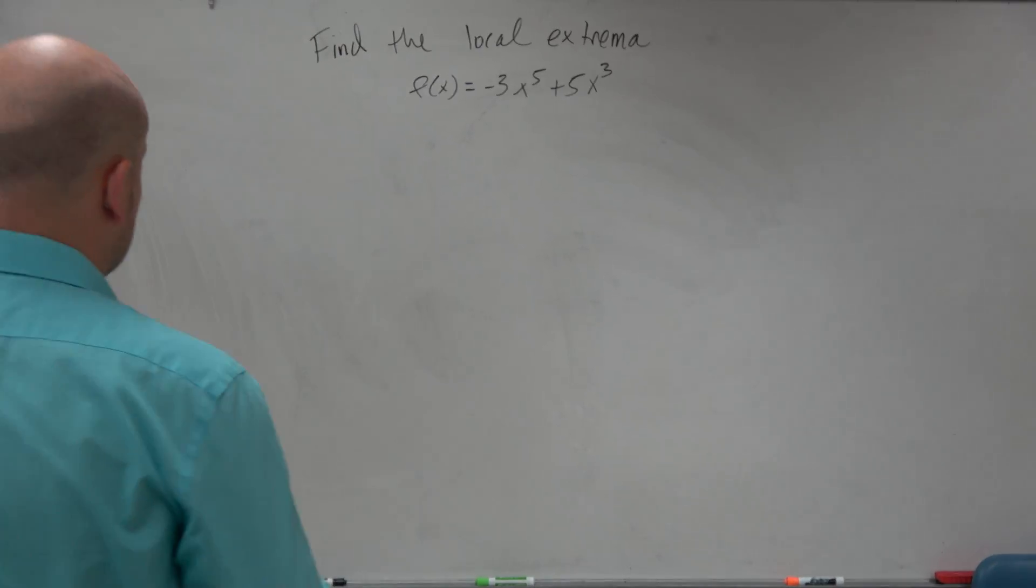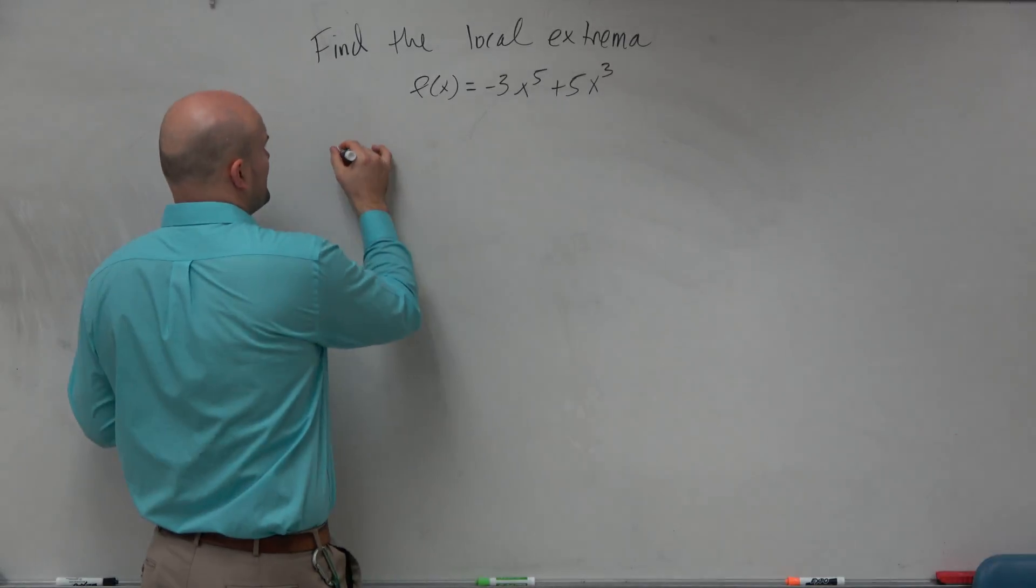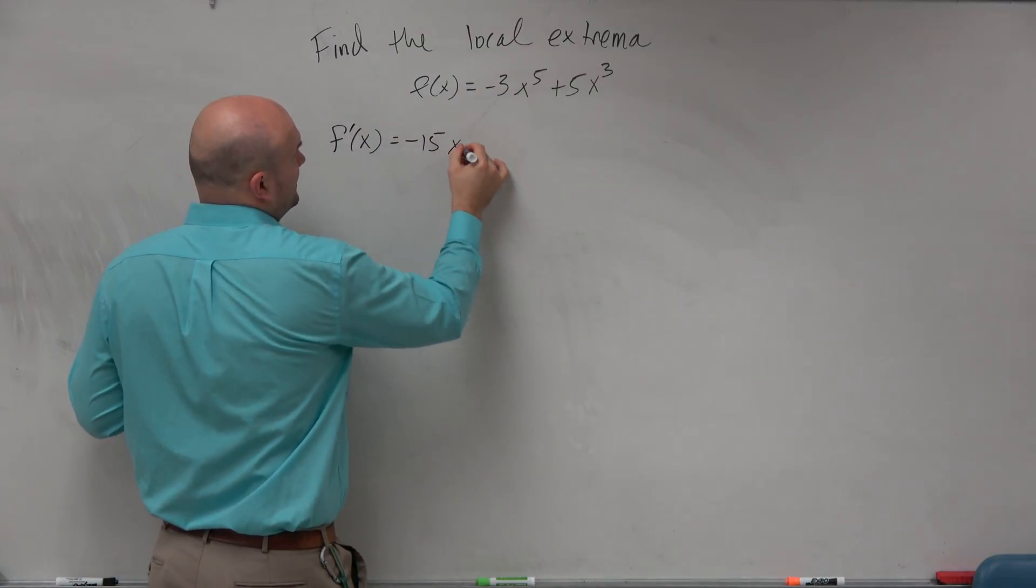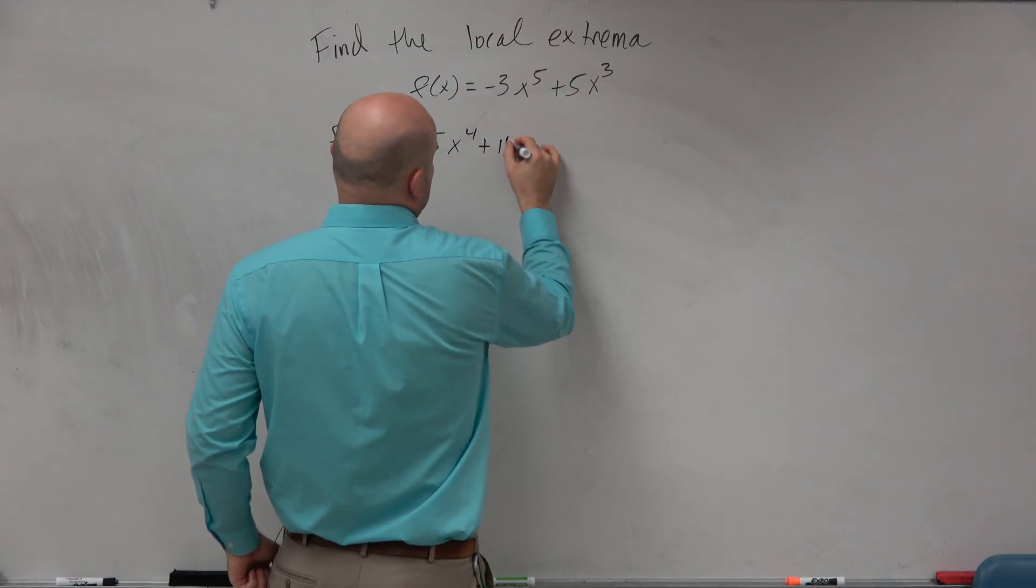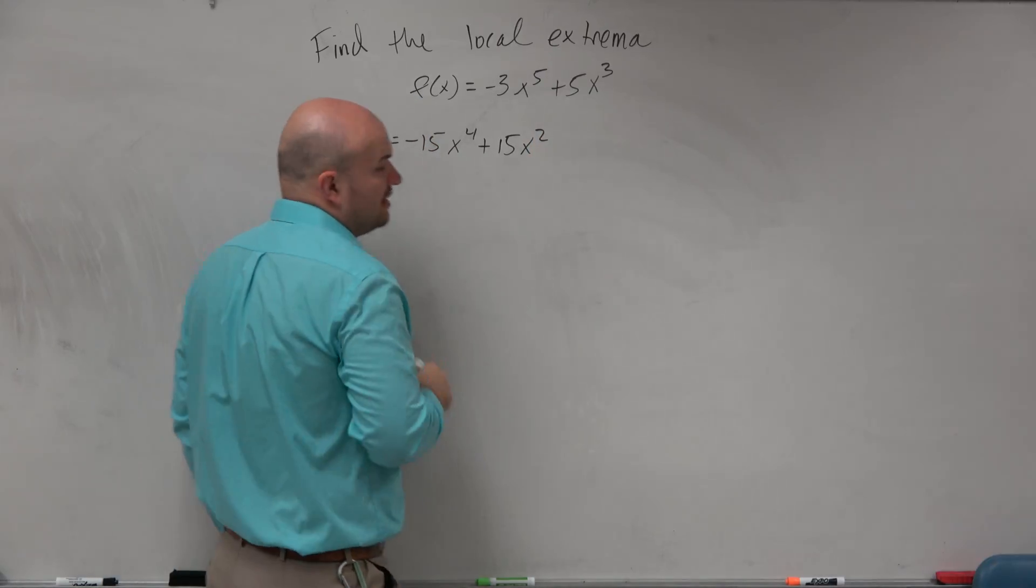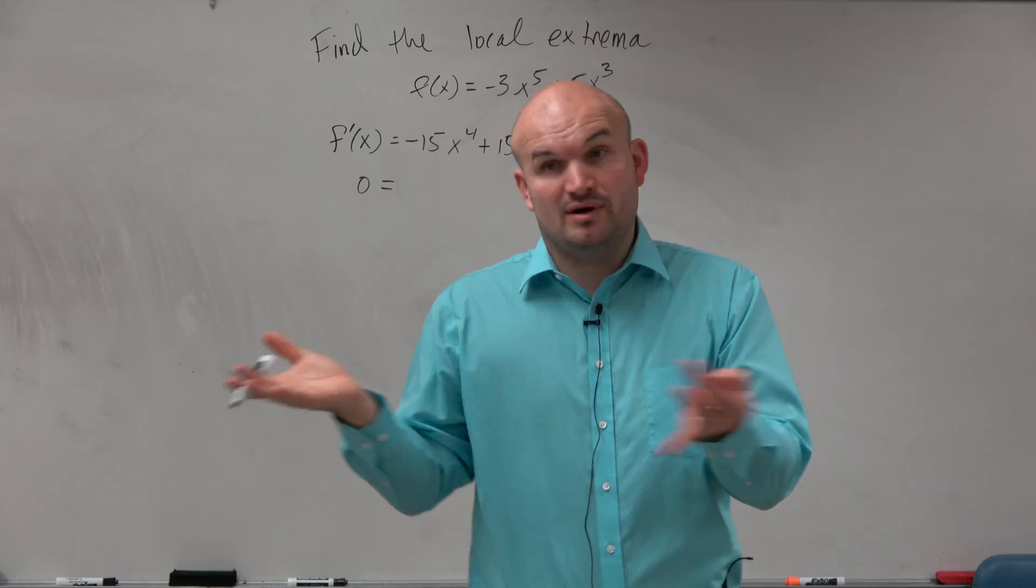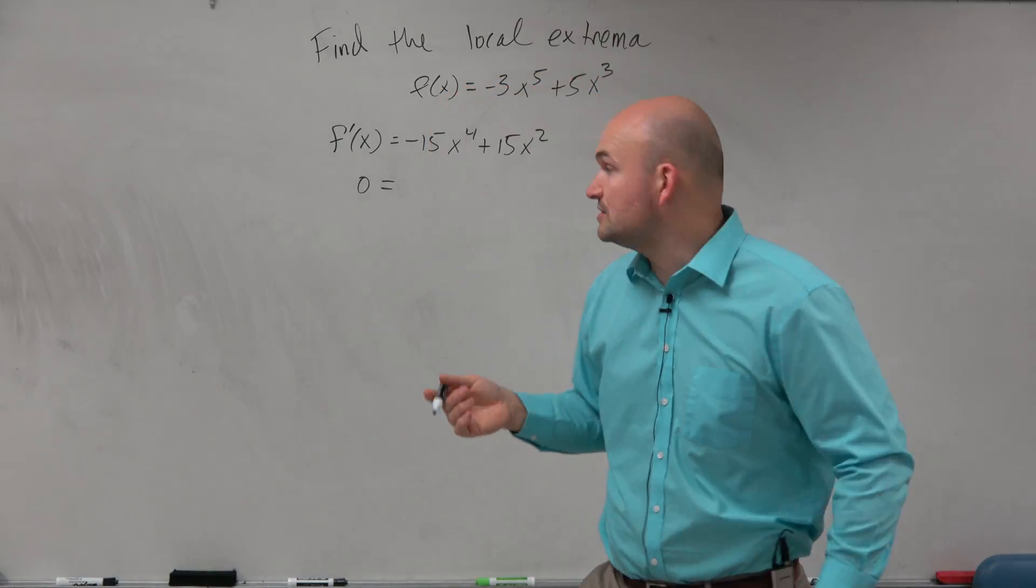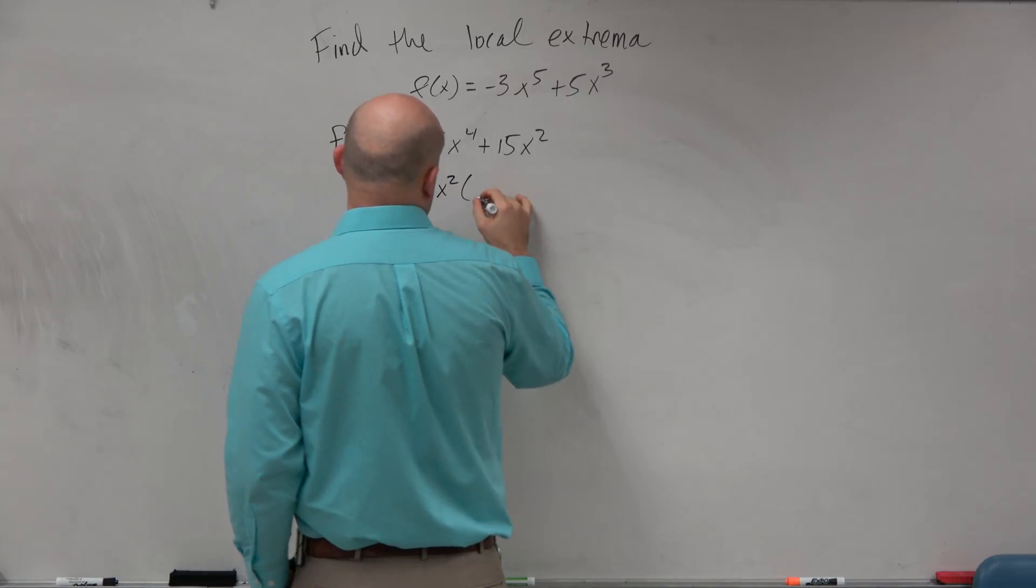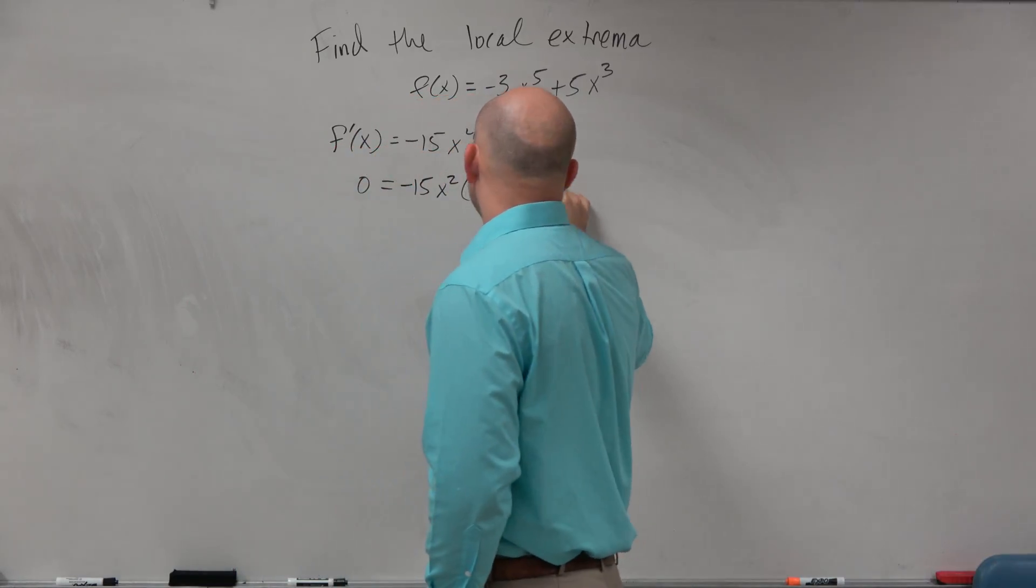The first thing we're going to want to do is find the extrema. We're going to find f prime of x, which in this case is negative 15x to the fourth plus 15x squared. We can set that equal to 0. I'm going to go and factor out a negative 15x squared.